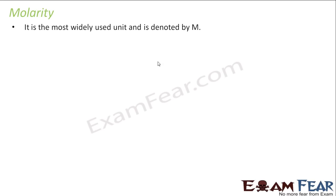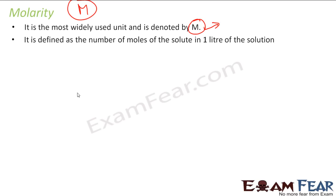Then we have something called molarity — it is the most widely used. It is denoted by capital M (not small m). Molarity is defined as the number of moles of solute in one liter of solution. Please note: it is number of moles of solute in one liter of solution. We will take one example on this.